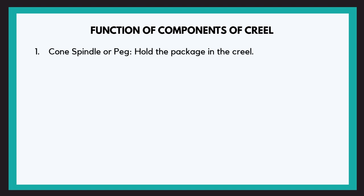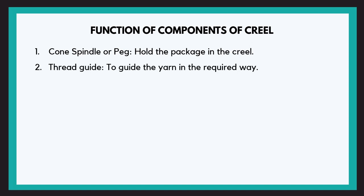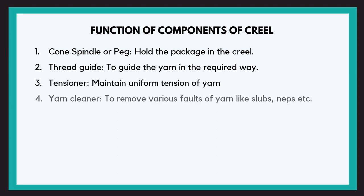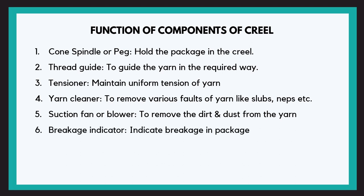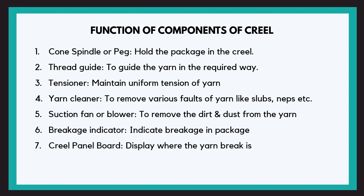Now let us look at the parts of the creel and discuss the functions of every part. The cone spindle or peg holds the package in the creel. The thread guide guides the yarn in the required way. The tensioner maintains uniform tension of yarn. In case of a knot or a nep, the yarn clearer removes the fault. The suction fan or blower removes the dirt and dust around the yarn. The breakage indicator indicates a breakage in any package.